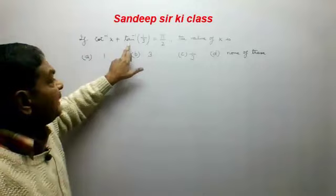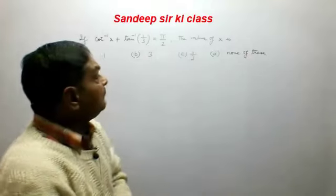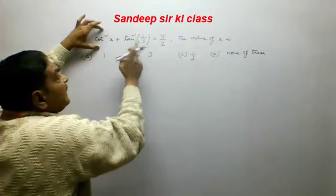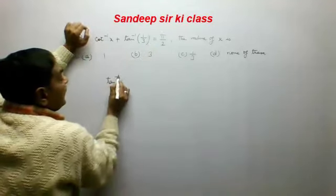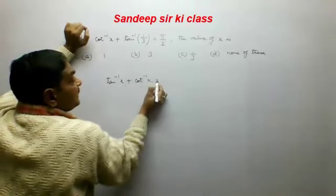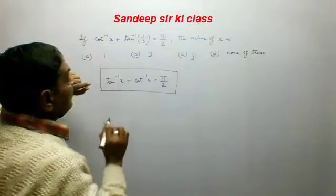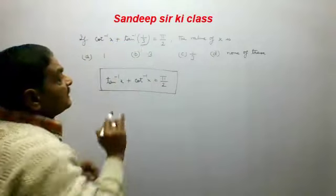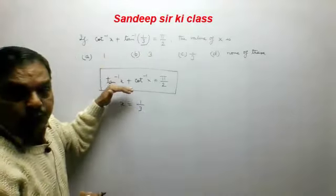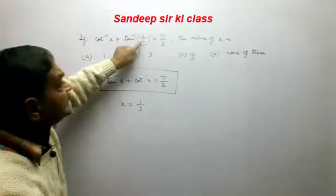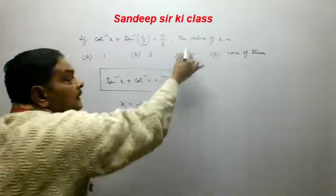The last question is: if cot⁻¹(x) + tan⁻¹(1/3) = π/2, find x. Recalling the formula tan⁻¹x + cot⁻¹x = π/2, comparing with the given equation, we see that in place of x there is 1/3. So x = 1/3. Option C is the correct option.